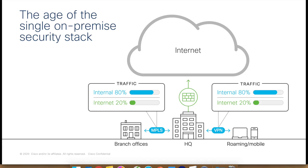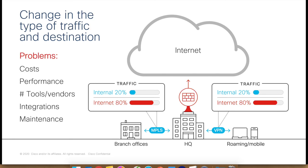When you talk about challenges, back in the day most of your traffic would go back to a central headquarter location or data center where your workloads lived. Your traffic mix was very internally dominant compared to what was going to the internet. That has changed today — almost 80% of traffic is now destined to the internet based on the tools and applications people are using. This leads to problems: increased cost because you have to maintain all this equipment, performance issues due to bottlenecks, managing many tools and vendors, complex integrations, and overall maintenance is very difficult.